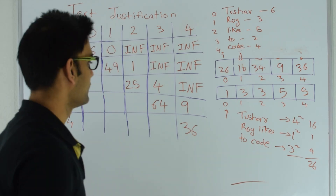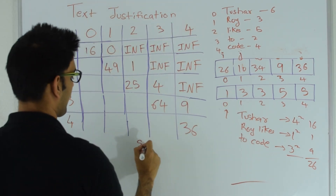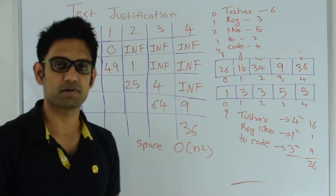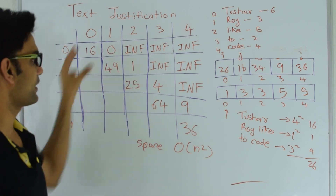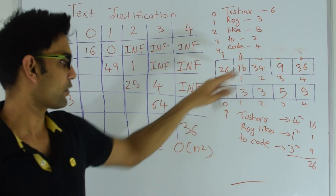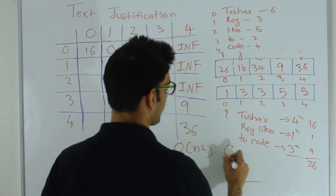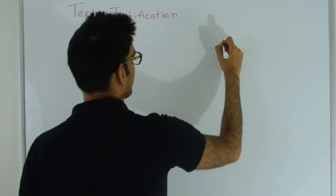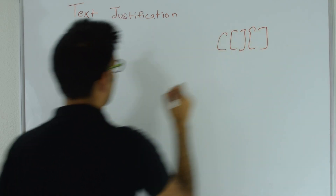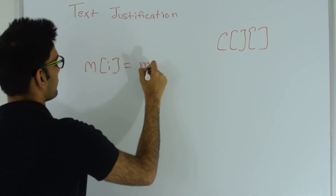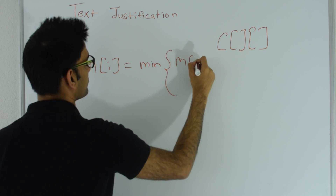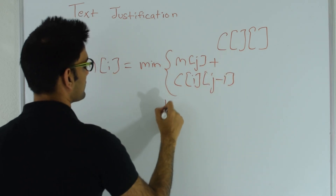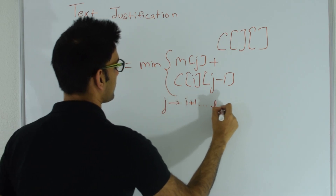The space complexity is O(n²). For time complexity: building the cost matrix takes O(n²) time, and the traversal with i and j also takes O(n²) time. So the overall time complexity is O(n²). The recurrence formula is: M(i) = minimum over j from i+1 to n of [ M(j) + C(i, j-1) ], where C is the two-dimensional cost matrix.